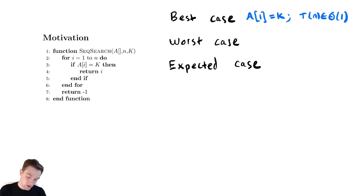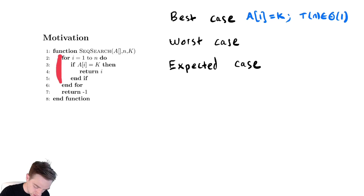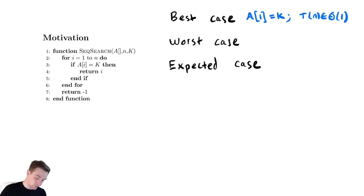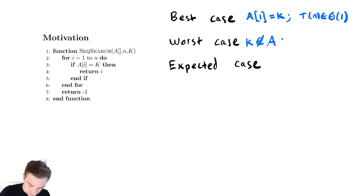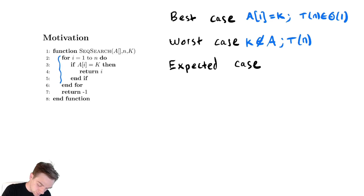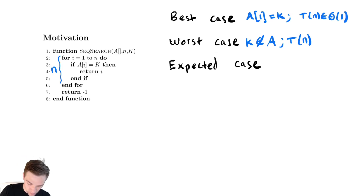What about the worst case? The worst case here is that we run through this for loop over and over again and never find k. After we run through the entire for loop we need to get down to the bottom return statement. So the worst case is that k is not in a. This for loop runs n times and the cost of one run is constant, so it would be in Θ(n).